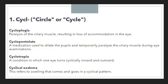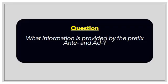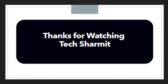That is all for today's topic. We have discussed three prefixes: CYCL, DE, and DIA, with their meanings and examples. The question for today is: what information is provided by the prefix ENDO and AD? We covered this in our previous session, so I recommend you share your knowledge and put the answer in the comment section. Thank you for watching.